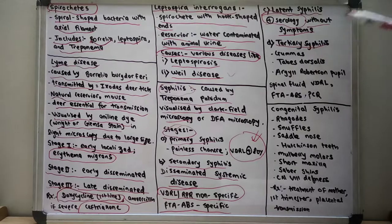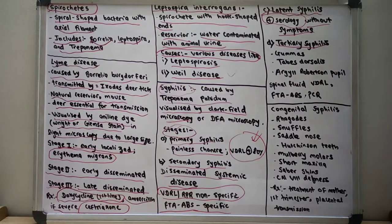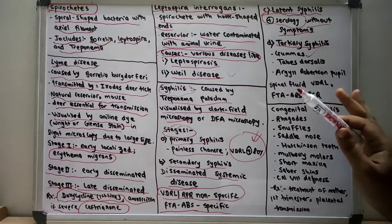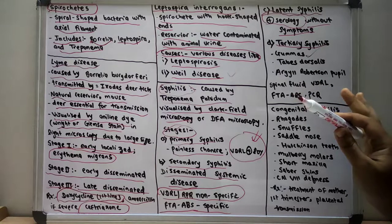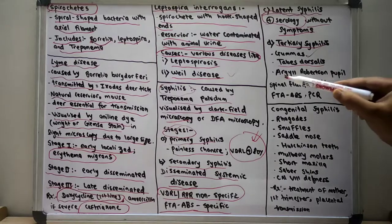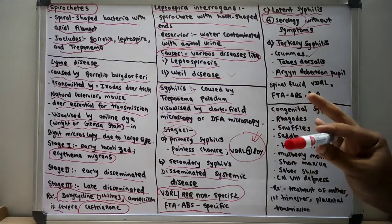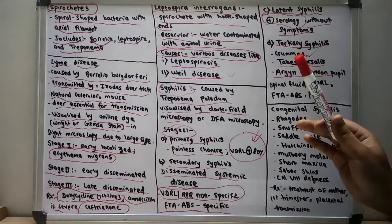In tertiary syphilis there is presence of gumma, which is a chronic granulomatous lesion, as shown in the picture. There can also be aortitis with vasa vasorum destruction, and neurosyphilis — also called tabes dorsalis. There is presence of the Argyll Robertson pupil, meaning the pupil constricts with accommodation but is not reactive to light.